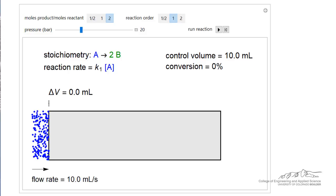This is at the start of the simulation. We picked the reaction order as first order and we selected the moles of product over moles of reactant as being equal to 2. So this means the reaction is one molecule of A reacts to two molecules of B.